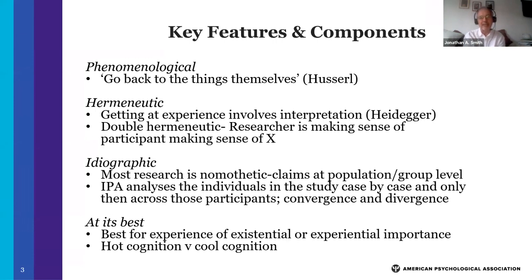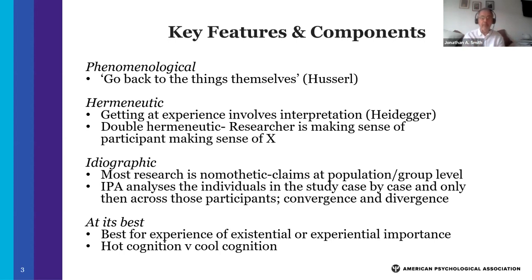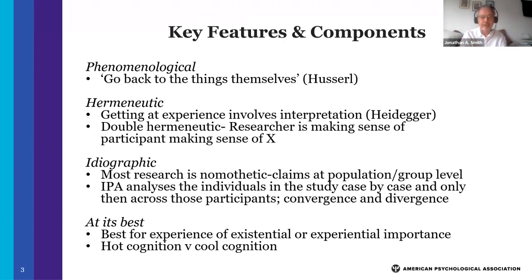Probably the most distinctive feature of IPA is its ideography. Most quantitative and qualitative research is nomothetic, where claims are made at a population or group level. An ideographic approach starts more cautiously and slowly, doing an analysis of each case, person by person, so that for one time the individual is the universe of inquiry. You look in detail at them, look for patterns of meaning in that person, and come to some working closure. You then move to the second person and work in the same way, and only after that do you look for convergence and divergence across participants.